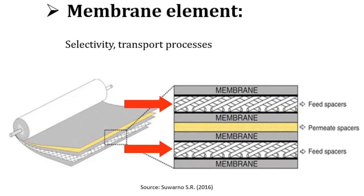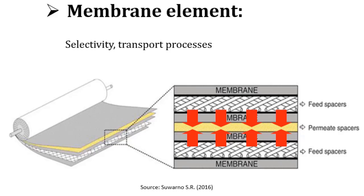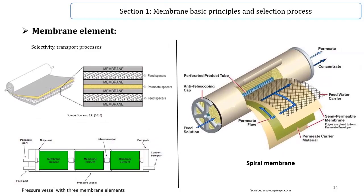Once feed is discharged to the element, it first flows to the feed channels, and then after passing through the membrane, goes to the permeate channel and is discharged to the permeate tube. There is also a pressure drop between feed and permeate sides, which will be discussed in Section 4: Membrane Design.